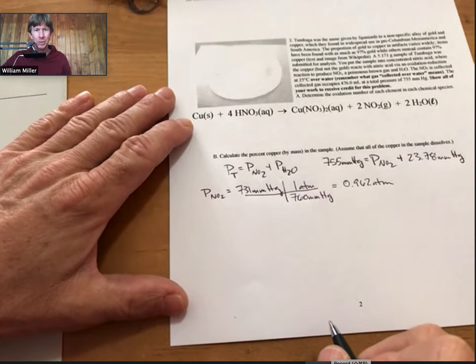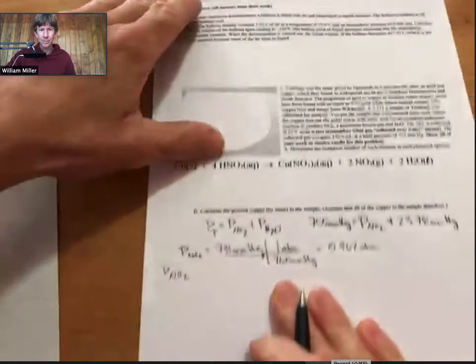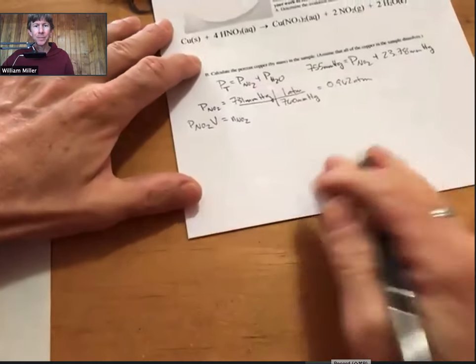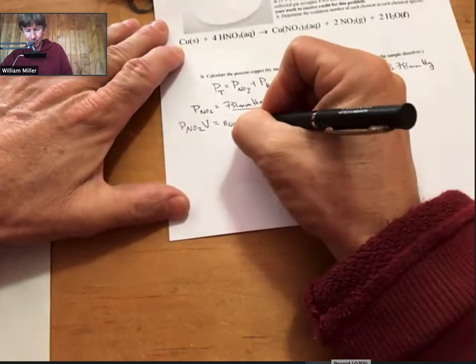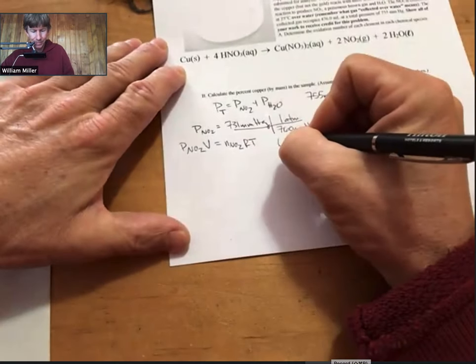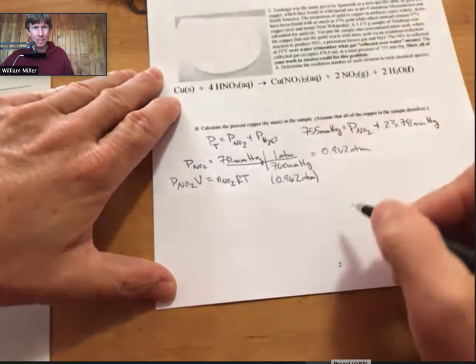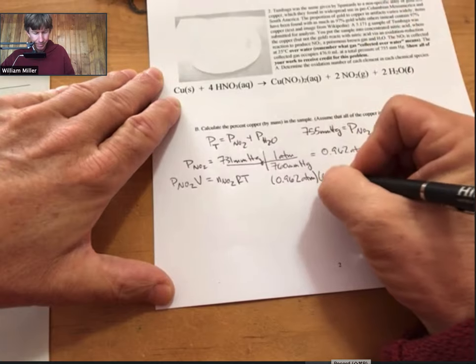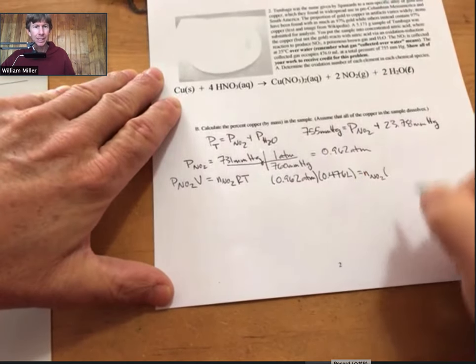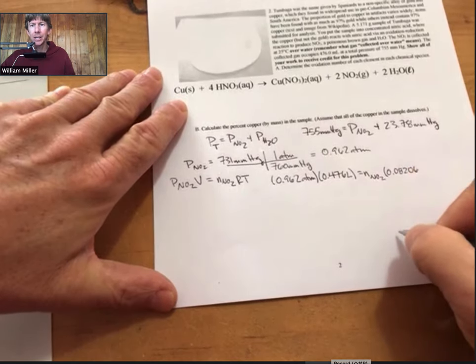Now, let's write the ideal gas law specifically for the nitrogen dioxide. Partial pressure of nitrogen dioxide times volume equals moles of nitrogen dioxide times the ideal gas law constant times temperature. Like we said, 0.962 atmospheres is our partial pressure. Our volume given in the problem is 476 milliliters. Convert that to liters, we get 0.476 liters. Subbing in the ideal gas law constant, 0.08206 liter atmospheres per mole kelvin.